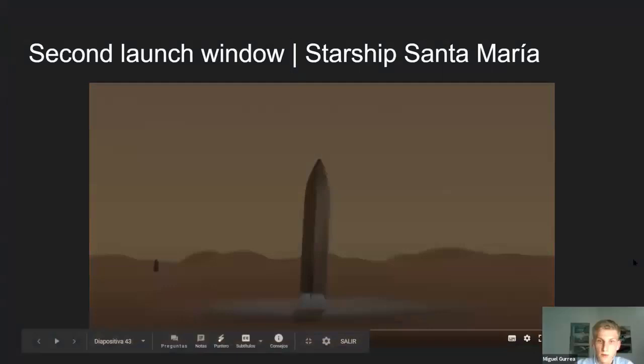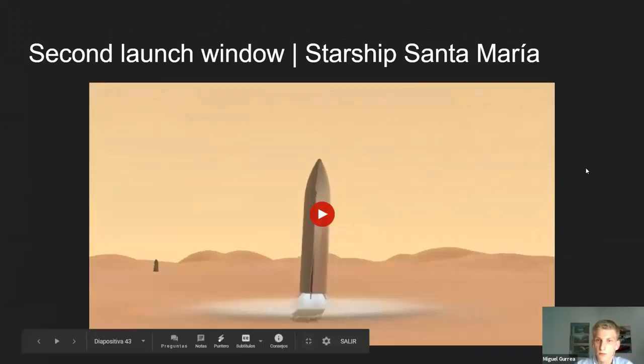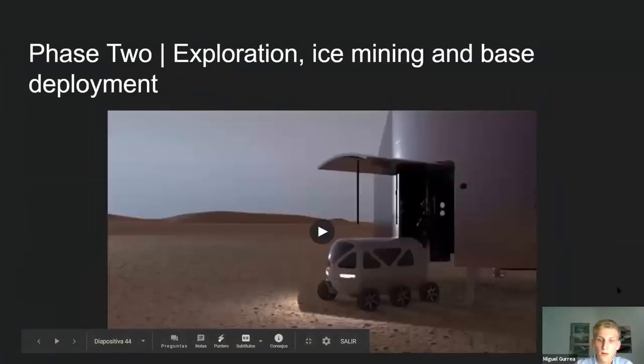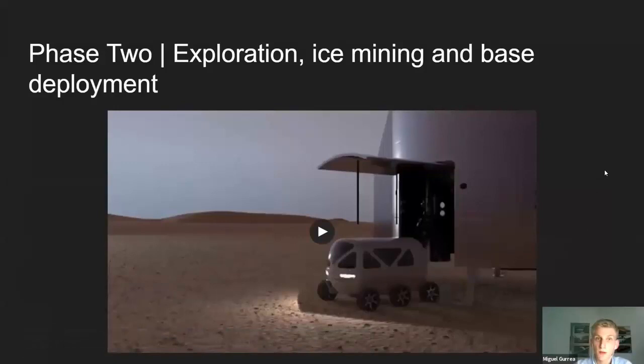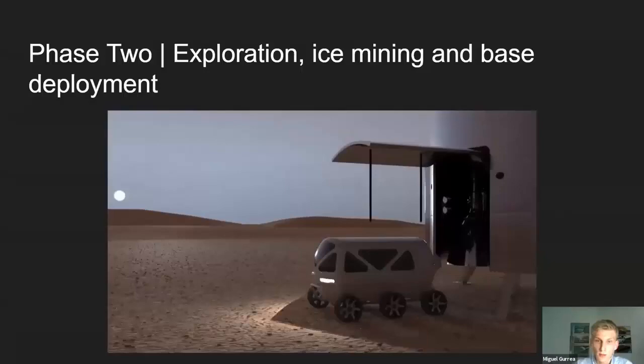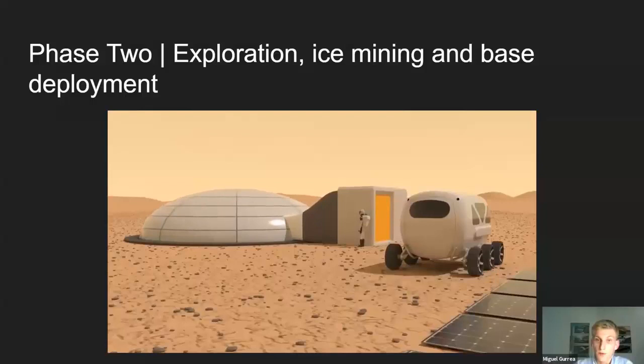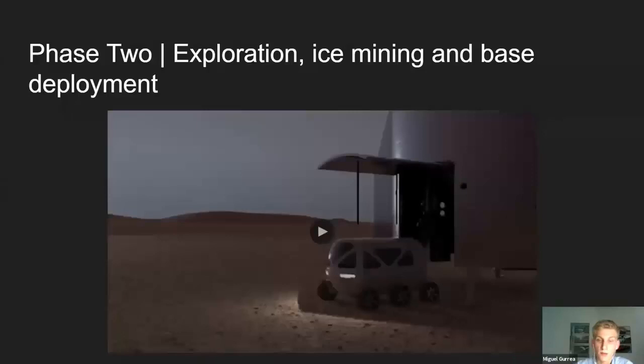Starship Santa Maria lands a safe distance away from the others. Once it has landed, Phase 2 starts: exploration, ice mining, and base deployment. The pressurized rover deploys, which they can use to explore long-distance locations. They can also start mining for ice — they'll do that, but they don't depend on it for survival. Hopefully they'll start producing fuel from it, and if all goes well they'll deploy the initial habitat to live in for the last months of the trip.